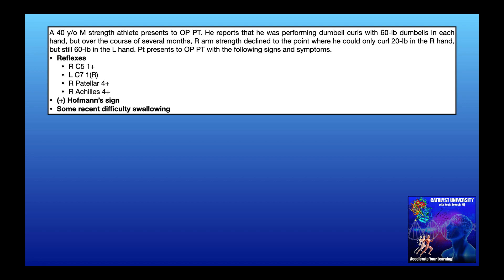Let's look at a case example. We have a 40-year-old male strength athlete presenting to outpatient physical therapy. He reports that he was performing dumbbell curls with 60-pound dumbbells in each hand, but over several months the right arm strength declined to the point where he could only curl 20 pounds in the right hand, while still curling 60 pounds with the left. That's a pretty substantial loss of strength that can't be explained by disuse or muscle soreness — muscle soreness might drop you 10 pounds for one session, but you'd be back to normal within a couple of days to a week. That's a humongous red flag.